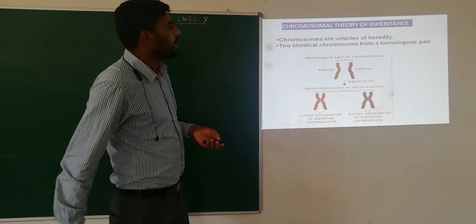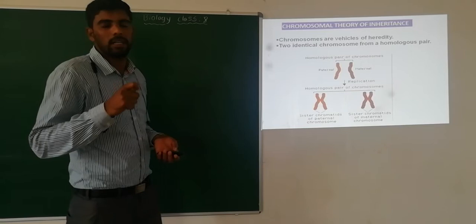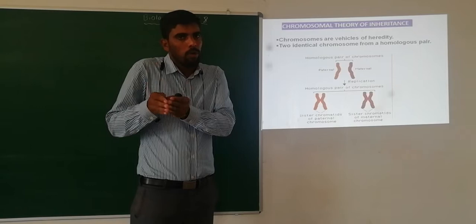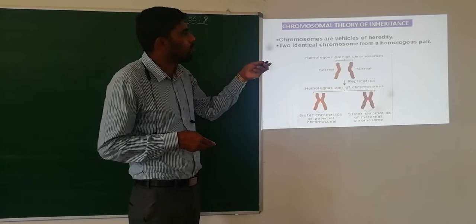Coming to the chromosome theory of inheritance — the first point is that chromosomes are the vehicles of heredity. Chromosomes are called vehicles because, just as a vehicle carries things from one region to another, chromosomes carry genes from one generation to the next generation. Hence chromosomes are called vehicles of heredity.